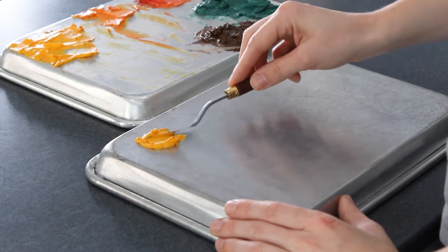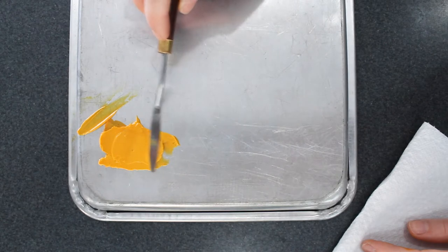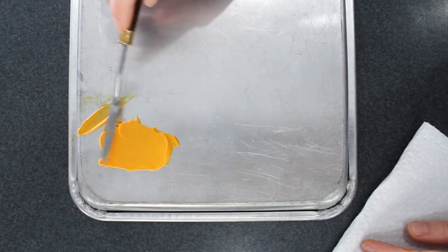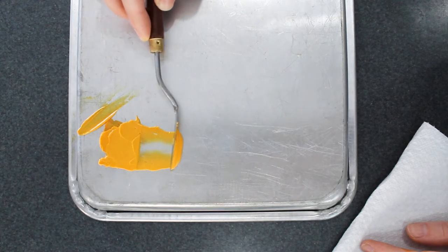So I start by creating a patch of buttercream that is really nice and even, then I angle the palette knife so that the edge is against my sheet tray and I scrape it until the frosting builds up into an even little mound.